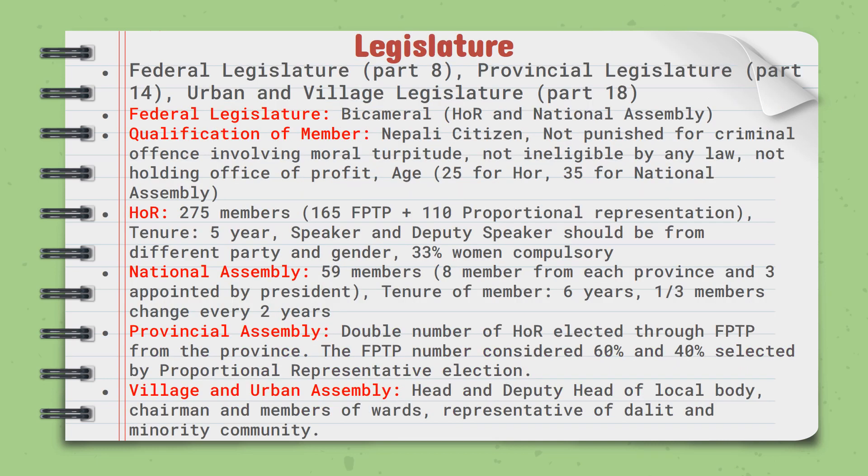Let's talk about legislature. Like the executive, the legislature is also divided into three levels. There is federal legislature at the centre, provincial legislature which we call the Province Assembly, and urban and village legislature at the local level. The federal legislature is bicameral, with an upper house — the National Assembly — and a lower house — the House of Representatives. In the province, there is a unicameral legislature called the Province Assembly, and at the local level there is the Village Assembly or Urban Assembly.